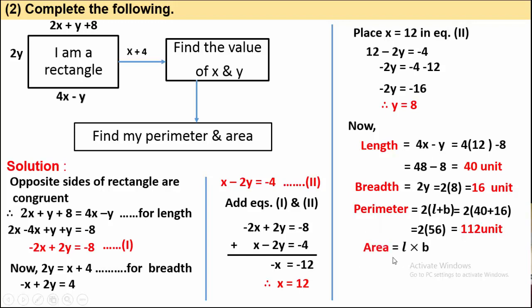Area equals L into B. Putting values: 40 into 16 equals 640 square units. So we have found x, y, perimeter, and area. Now we move to the next question.